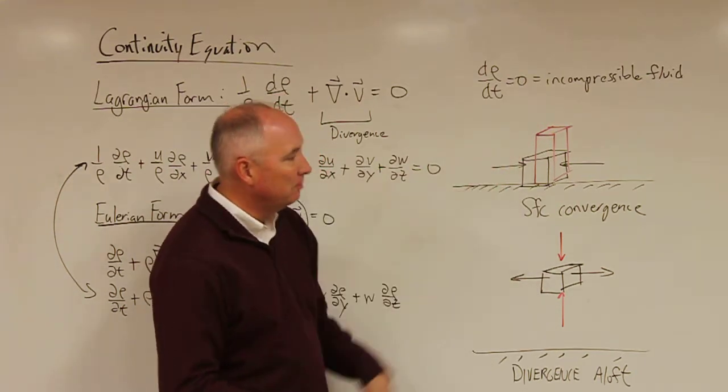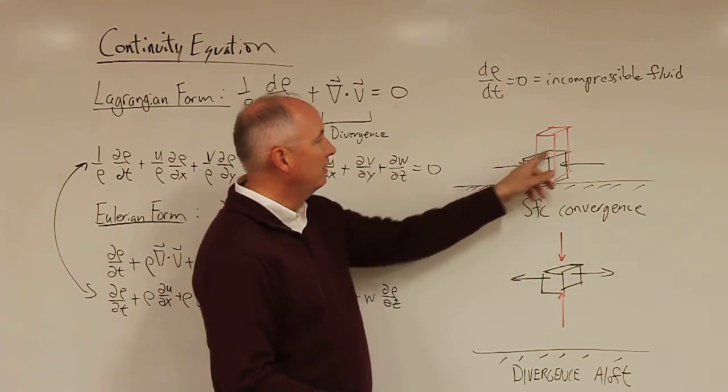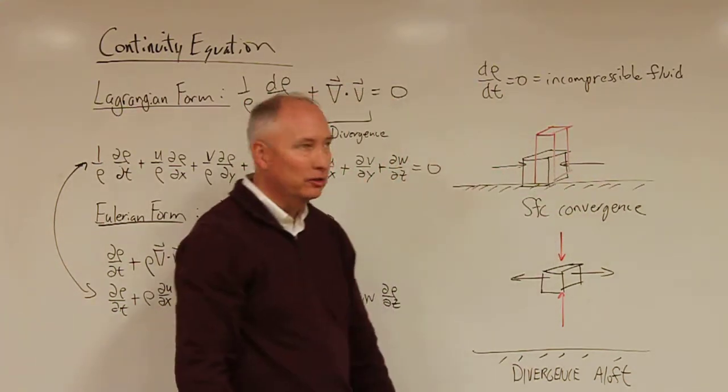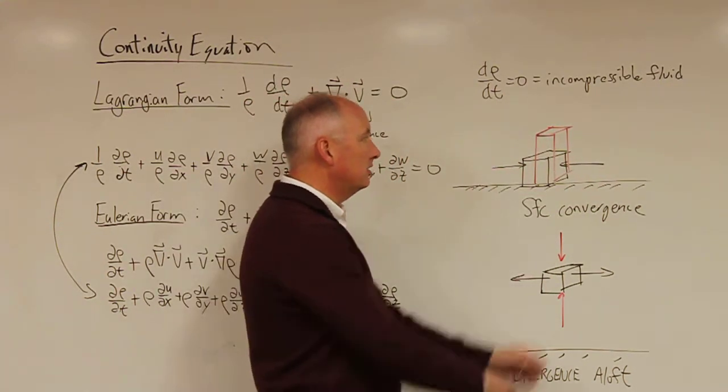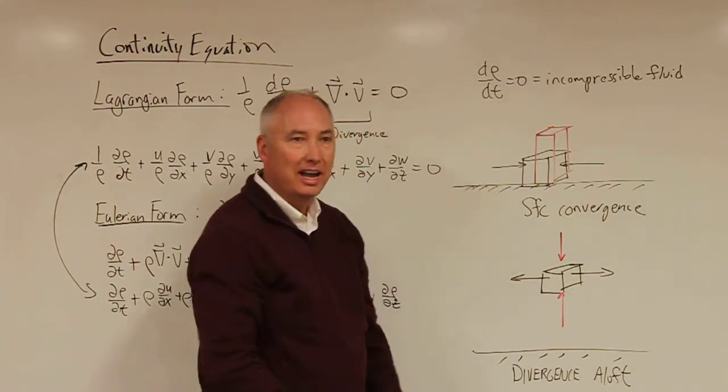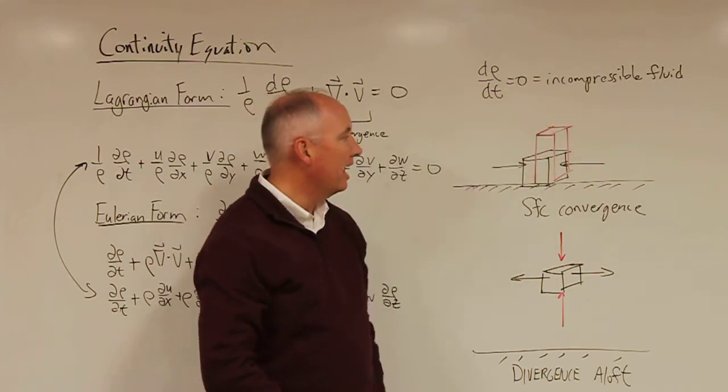Here's an example of surface convergence. You have the ground, you have an initial box here in black. Air is converging at the surface, and as a result,